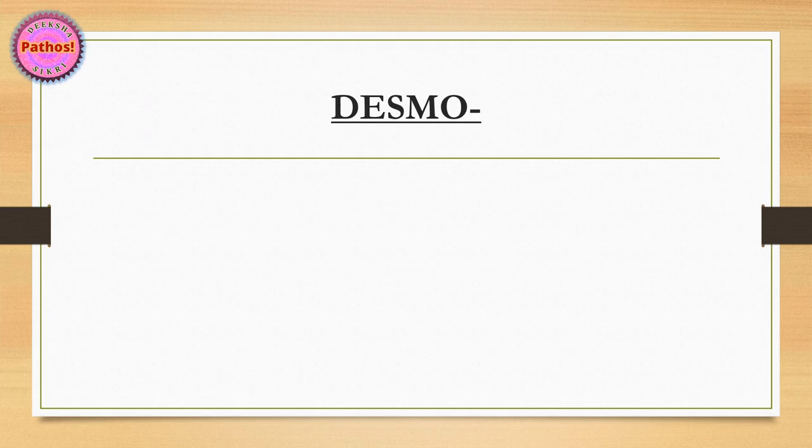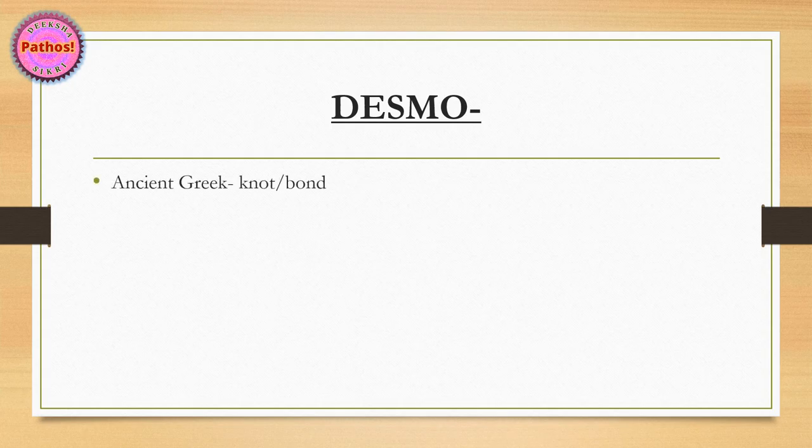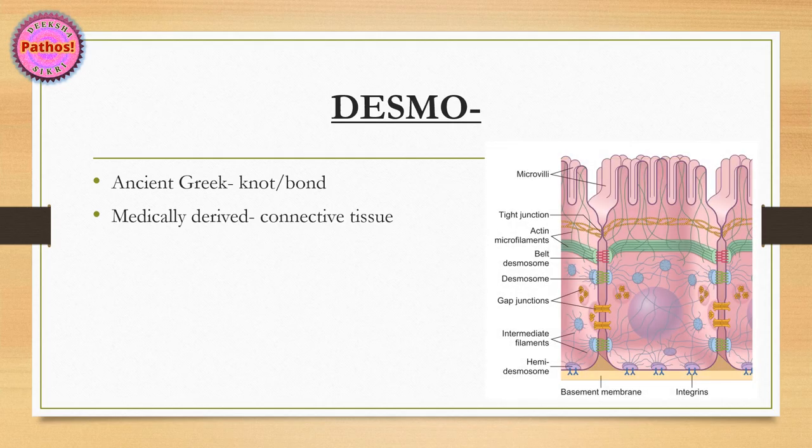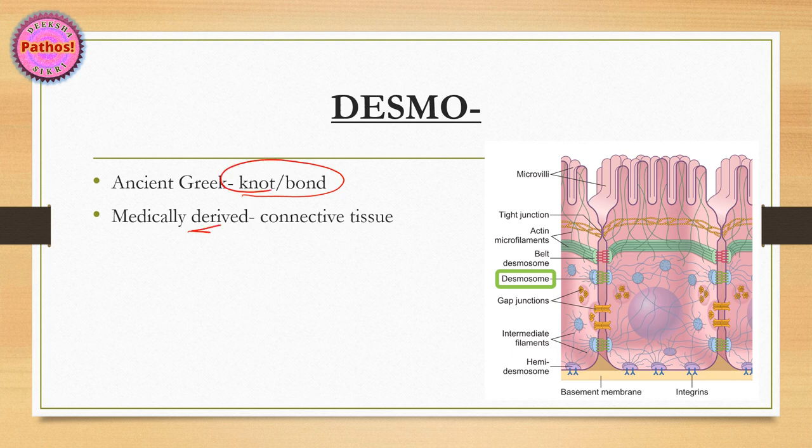The first word I've picked is Desmo. The meaning of the word Desmo is actually a knot or a bond from ancient Greek. If you add a suffix to it, you can create different kinds of words. Remember that the term knot and bond in medical language is basically something that connects, the bonding, the knotting, it connects connective tissue.